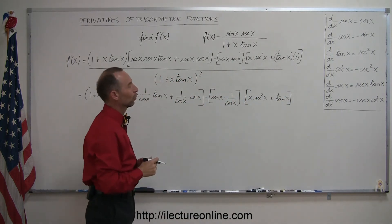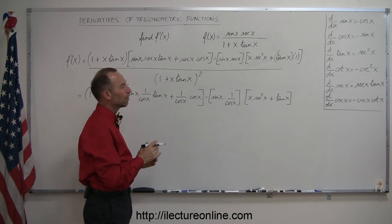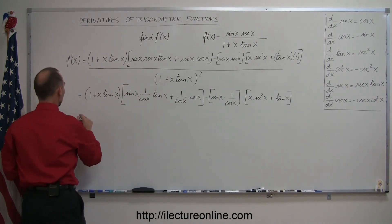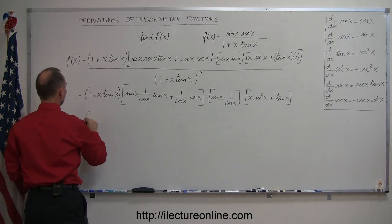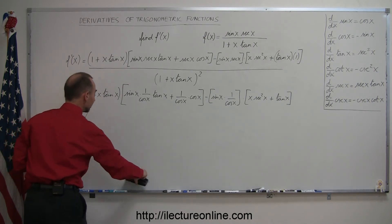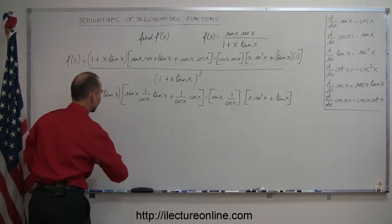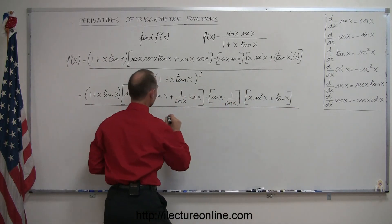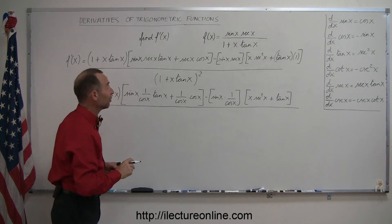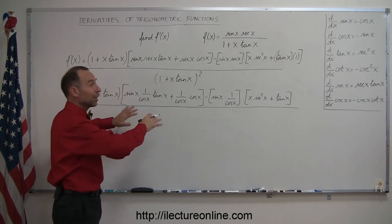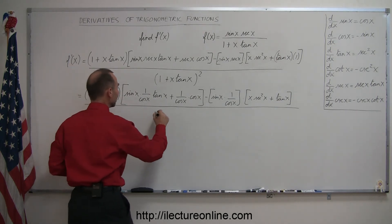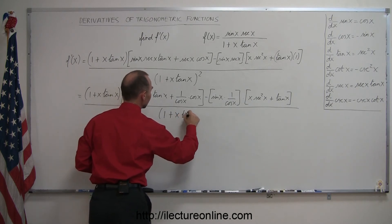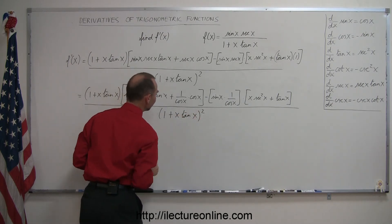Secant of x is 1 over cosine, so we'll see if we can do something there. Simplifying a little bit further — I forgot my denominator, and that is important. Sometimes we get lazy and skip the denominator while working through the numerator — that's not a good idea. Always copy everything. So the denominator remains tangent of x quantity squared.